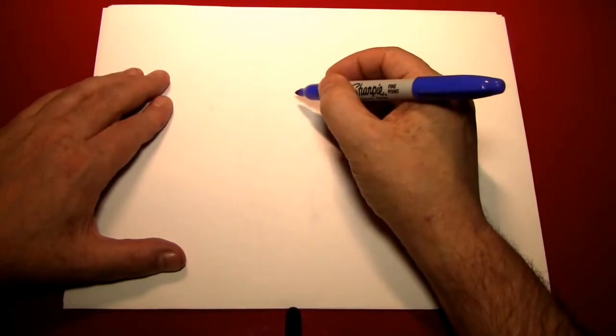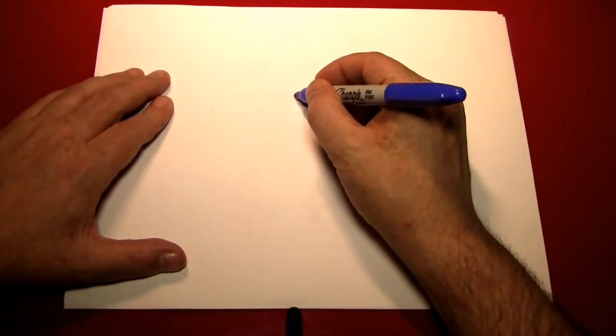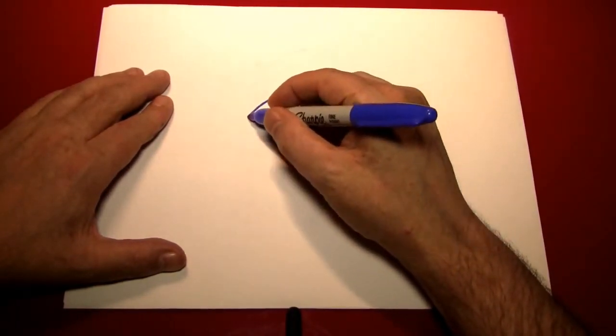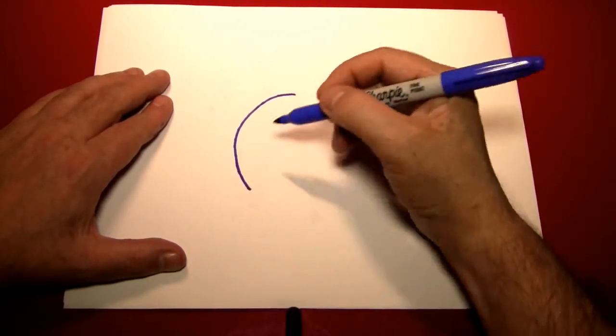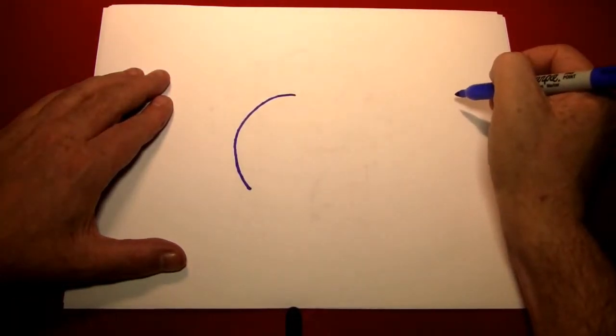So let's get started. The first thing we're going to need is the skull shape. We'll start at the top here and make a big curved line around to the left. Not a full semicircle, just about that much.